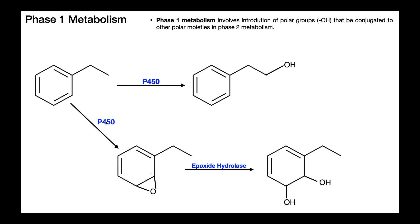Another reaction that P450s often perform on aromatic rings is epoxidation. Rather than simply hydroxylating, it introduces an epoxide functional group. There's a subsequent enzyme called epoxide hydrolase that acts on this, breaking the epoxide into two separate hydroxyl groups. Phase one metabolism is just adding these polar groups that can then be conjugated in phase two metabolism — these OH groups are polar and reactive so that we can add things onto them.